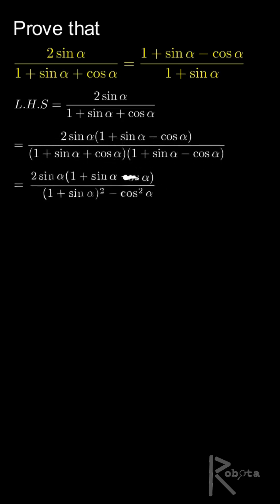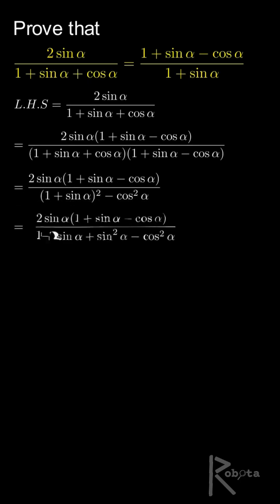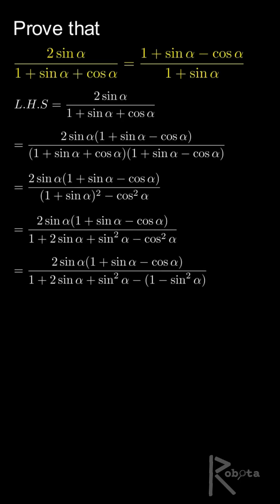So our denominator becomes 1 plus sin α squared minus cos squared α. We square 1 plus sin α, which gives 1 plus 2 sin α plus sin squared α, then we subtract cos squared α. Now apply the identity that sin squared α plus cos squared α is equal to 1, so cos squared α can be written as 1 minus sin squared α.